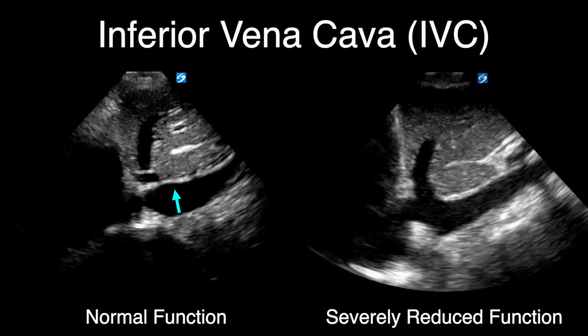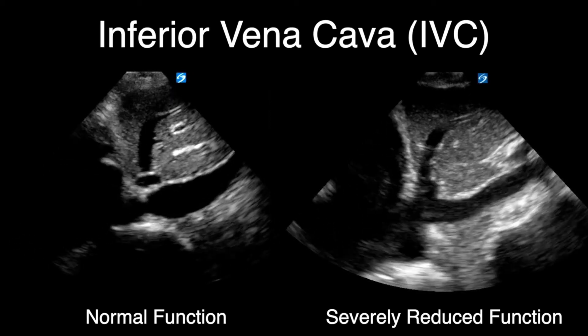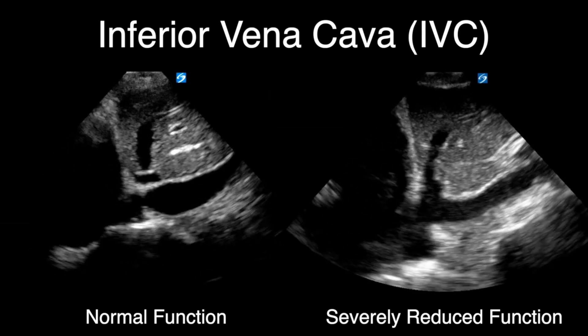The IVC does not always reflect what the heart is doing — CVP does not always correlate with cardiac function. In the severely reduced EF patient the IVC shows approximately 50% collapse with inspiration, while the normal functioning patient's IVC does not collapse much, indicating elevated central venous pressure. You are assessing respiratory variation in IVC diameter, not compressibility. This can be eyeballed rather than formally measured.